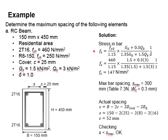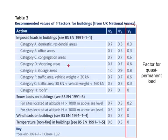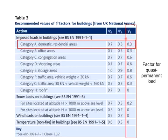First, determine the stress in the reinforcement bar using the appropriate equation. For residential areas, refer to the table for domestic and residential buildings. The factor for quasi-permanent variable load is 0.3.